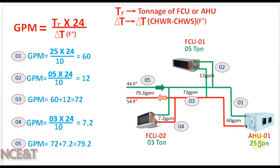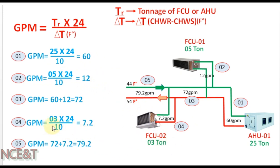The capacity for AHU1 is 25 tons. Applying in the formula: 25 × 24 ÷ ΔT — where ΔT = 54 − 44 = 10 — we get 60 GPM for AHU1. For FCU1 with capacity 5 tons: 5 × 24 ÷ 10 = 12 GPM. Similarly for FCU2 with capacity 3 tons: 3 × 24 ÷ 10 = 7.2 GPM.